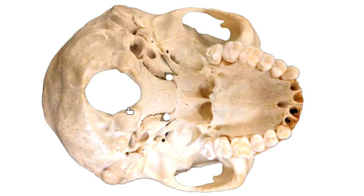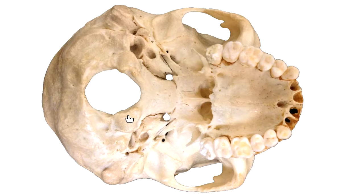In front of and to the side of the foramen magnum are the occipital condyles — smooth pads where the atlas, our first vertebra, sits. Every time you nod your head yes, you are pivoting on these occipital condyles, so they are very important for allowing that motion.